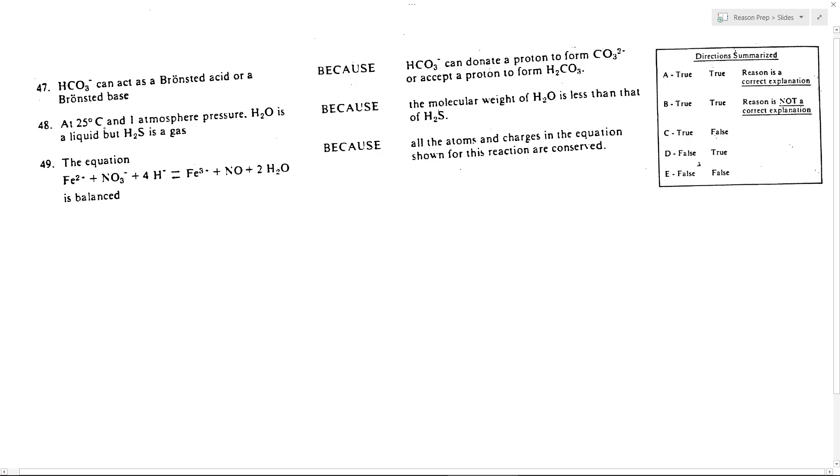HCO3- can act as a Bronsted acid or Bronsted base. Indeed, HCO3- can gain a proton to become H2CO3, making it a Bronsted base, but it can also donate its proton to become CO3-. So in that process, it gains that proton to become H2CO3, or it can lose it to become CO3-. So it can be either a Bronsted acid or base. It is amphoteric. That's true.